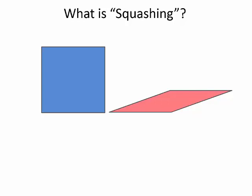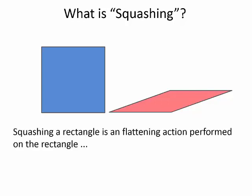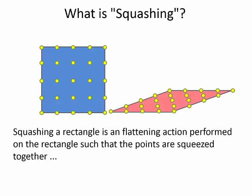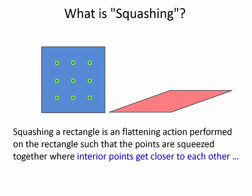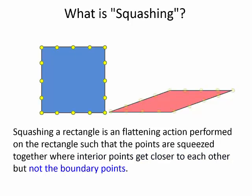Let's describe the term squashing loosely instead of defining it formally. Squashing a rectangle is a flattening action performed on the rectangle, such that the points are squeezed together, where the interior points get closer to each other, but not the boundary points. The space between the boundary points remains the same.